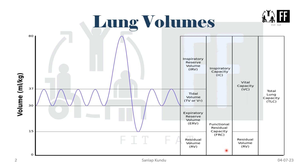The third capacity of the lungs is the functional residual capacity, which signifies the volume of air remaining in the lungs after a normal expiration — it includes residual volume and expiratory reserve volume. The total lung capacity is the volume of air present in the lungs after a deep or maximal inspiration, and it includes all four lung volumes: IRV, TV, ERV, and RV.